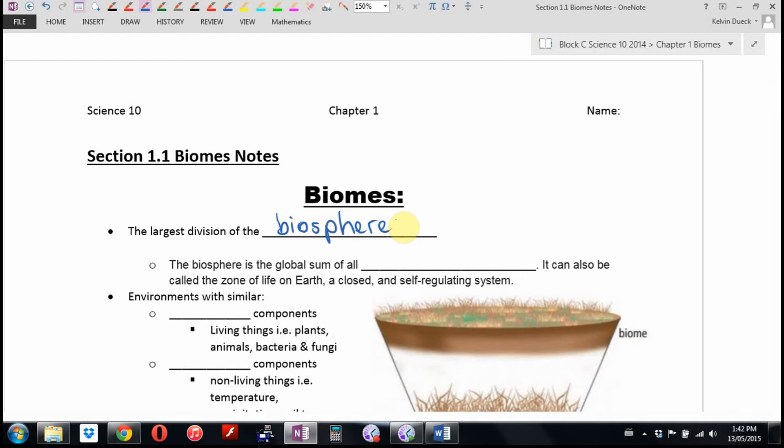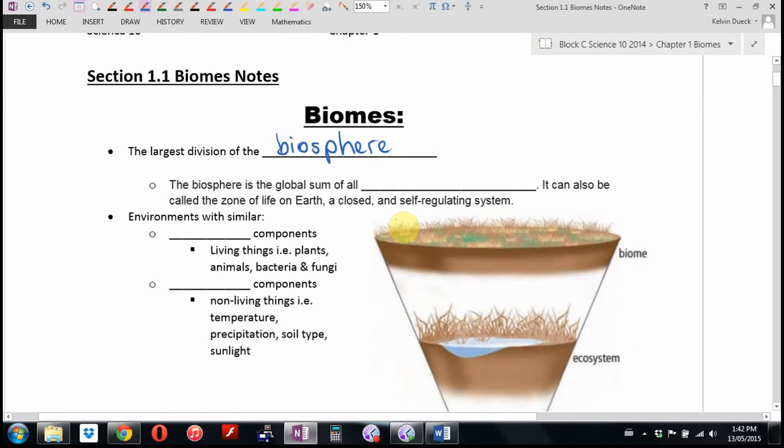So what we're talking about are the things that affect the living stuff on, which sphere do you think? Earth. We're starting out big. Biosphere is all the living things on Earth and the stuff that affects the living things on Earth. Then we're going to zoom in. The biosphere is the global sum of all what we call ecosystems. It can also be called the zone of life on Earth, a closed and self-regulating system.